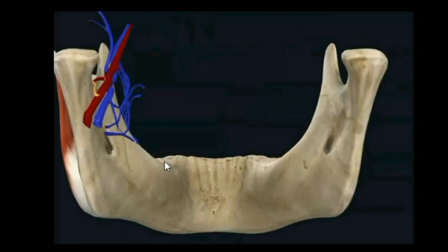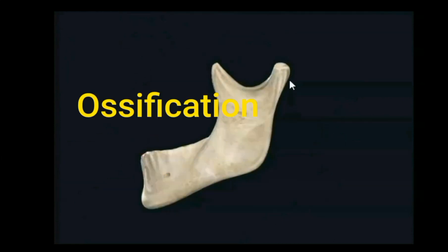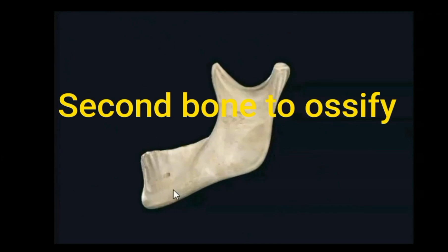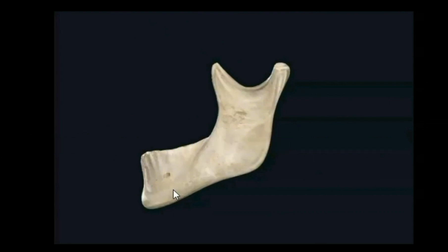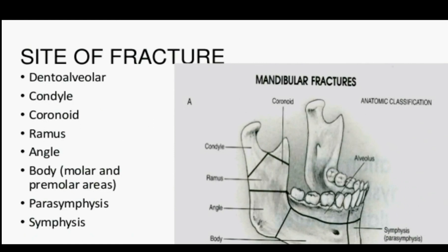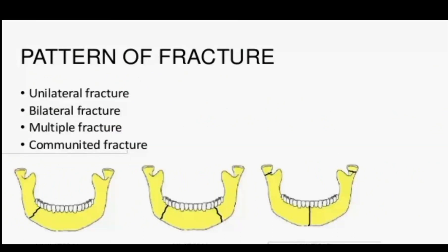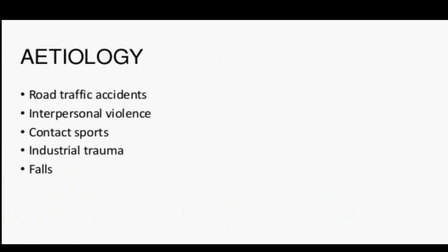The mandibular notch transmits the masseteric nerve and vessels; the masseteric artery is a branch of the second part of the maxillary artery, and the masseteric nerve is a branch of the anterior division of the mandibular nerve. The mandible develops within the cartilage. With age, the angle of the mandible is around 110–115 degrees (obtuse) in younger individuals, and the mandibular foramen is nearer the lower border in old age.